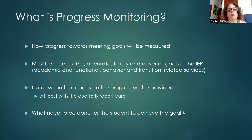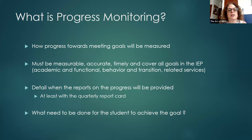Progress monitoring refers to how progress towards meeting goals will be measured, because they must be measurable goals. It has to ensure accuracy, meet timelines, and cover all the goals in the IEP, whether they be academic, functional, behavioral, transitional goals, or goals related to different related services such as speech, occupational therapy, vision, hearing impaired, or any other related service that has goals.